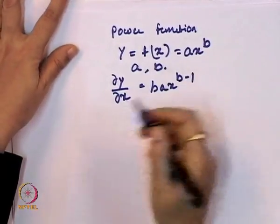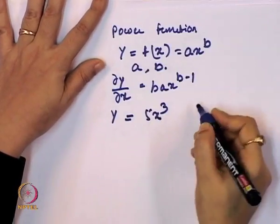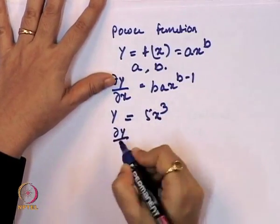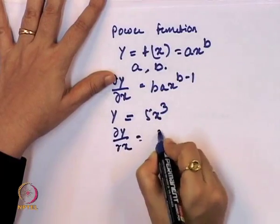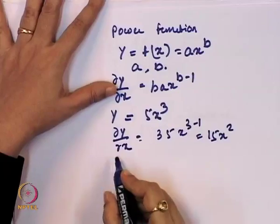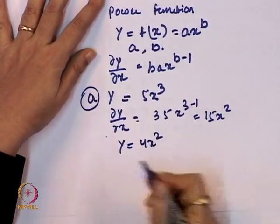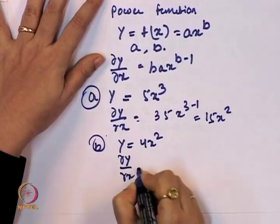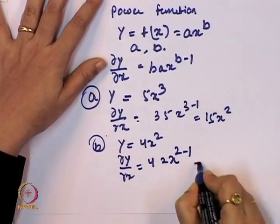Let us assign numbers to this form. Suppose y = 5x³. Then dy/dx = 3·5·x^(3-1) = 15x². Similarly, take y = 4x². Then dy/dx = 4·2·x^(2-1) = 8x.